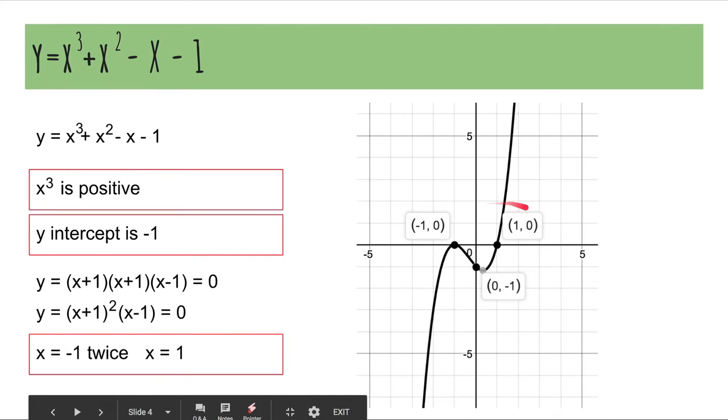That will make the graph look like this. So, because x plus 1 is a factor twice, so x is negative 1 is a solution twice, the graph, instead of going through x is negative 1, it's going to touch it. And then it's going to go down and turn to go through the other x solution.